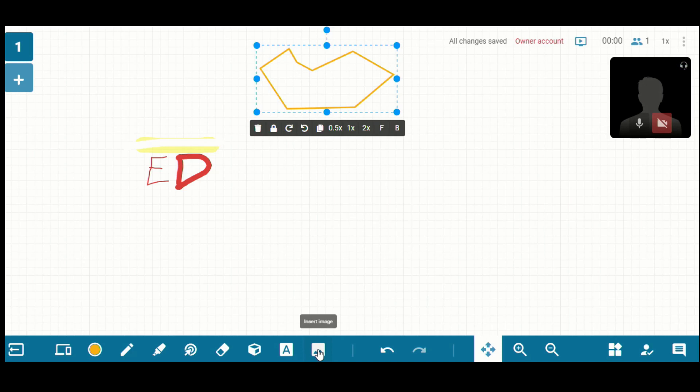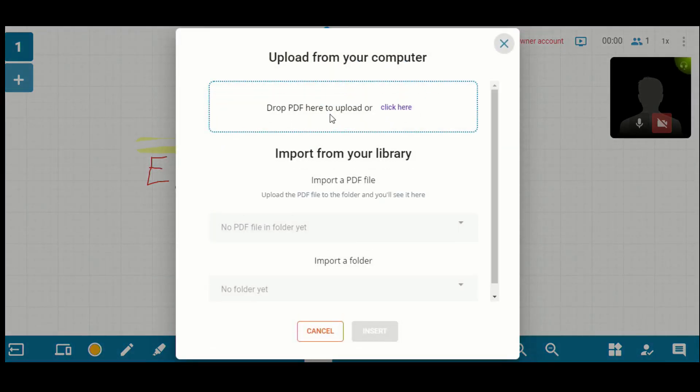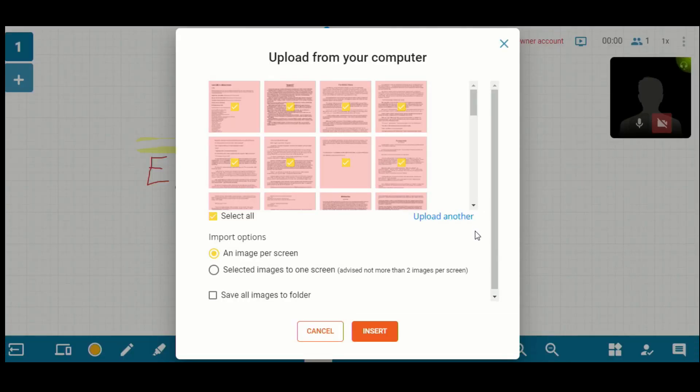You can also insert an image. And I absolutely love this because you can either insert images or documents. So if there was a worksheet that you wanted to model with the students or have the students work on, you can just import that. And so you see when I click on insert document, it'll allow you to drop a PDF in there. So I'll just pick one to show you what it looks like. So I've chosen a PDF that has multiple pages just to show you what it would look like if you wanted to have multiple pages in and you can select the pages that you want. And then you also have the import options of having an image per screen. So it'll create multiple screens for you. Or if you only had two, you could put them on the same screen. So let's just do an image per screen.